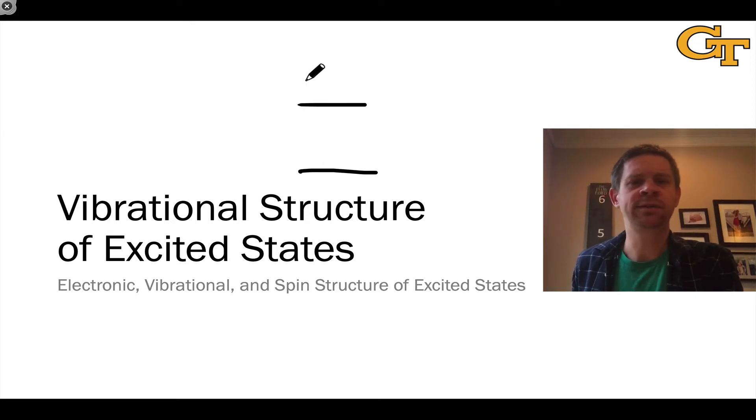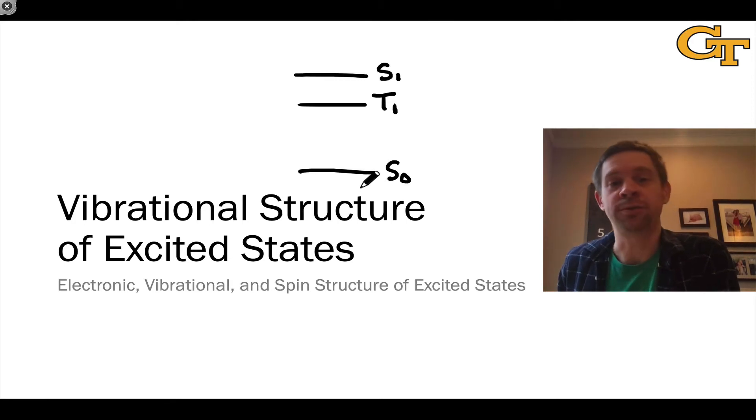This is a point that is sometimes obscured on state energy diagrams that plot the energies of the various electronic states as a function of electron configuration. So for example, a typical state energy diagram might look like this. And this doesn't show the vibrational levels within each electronic state.